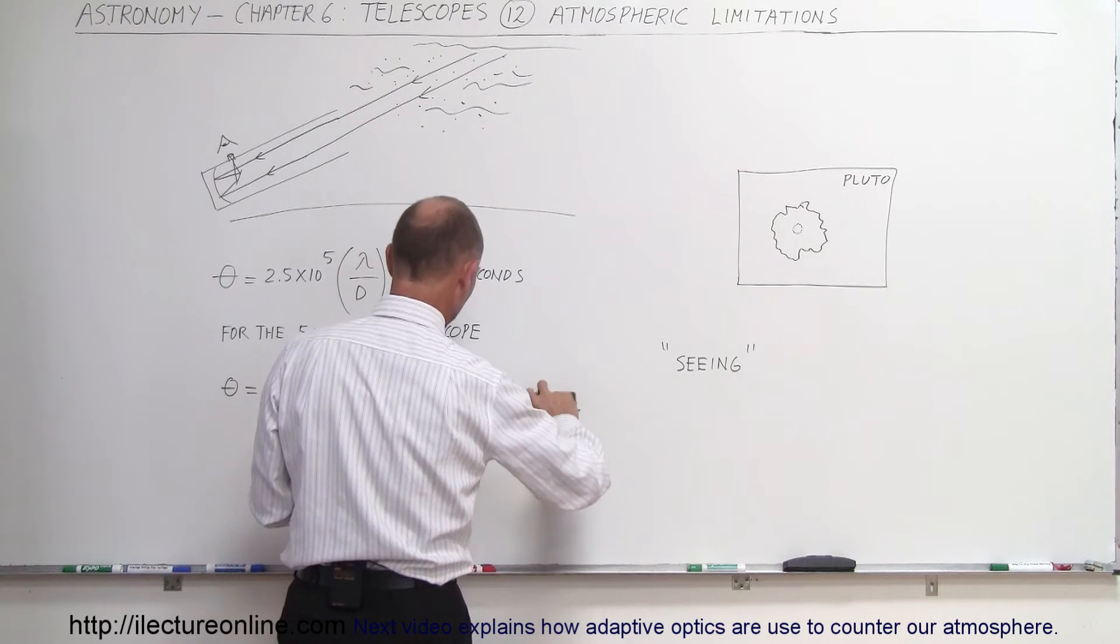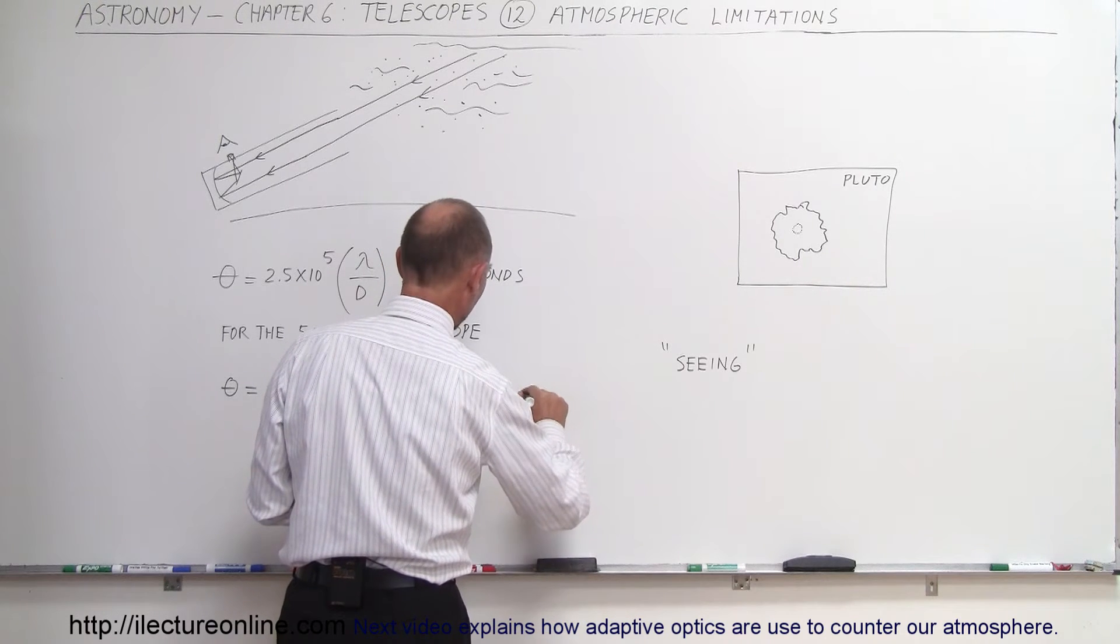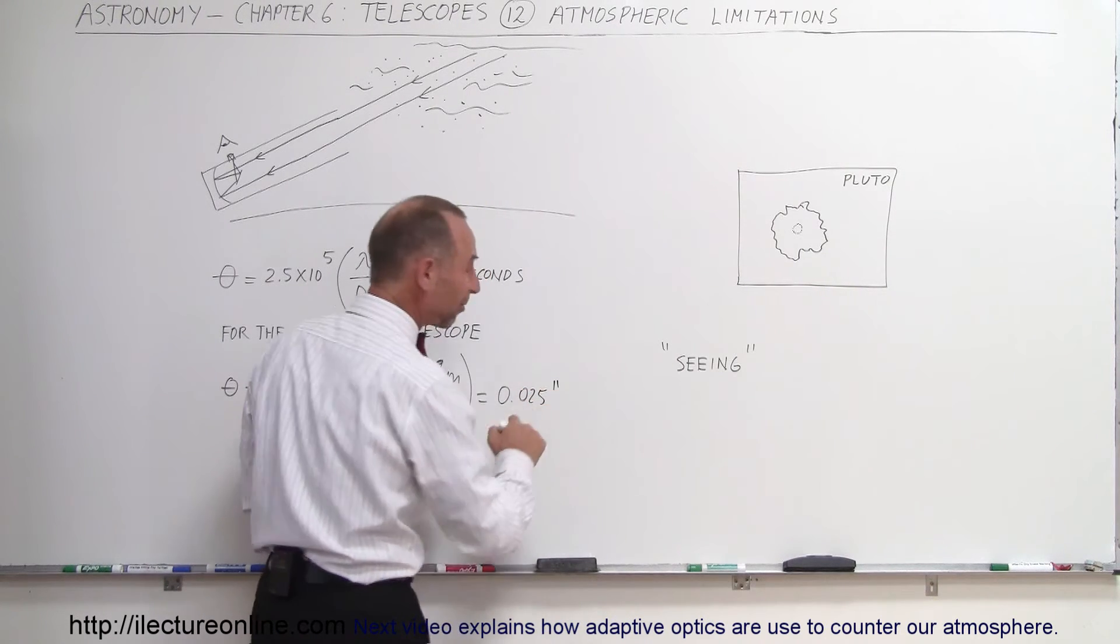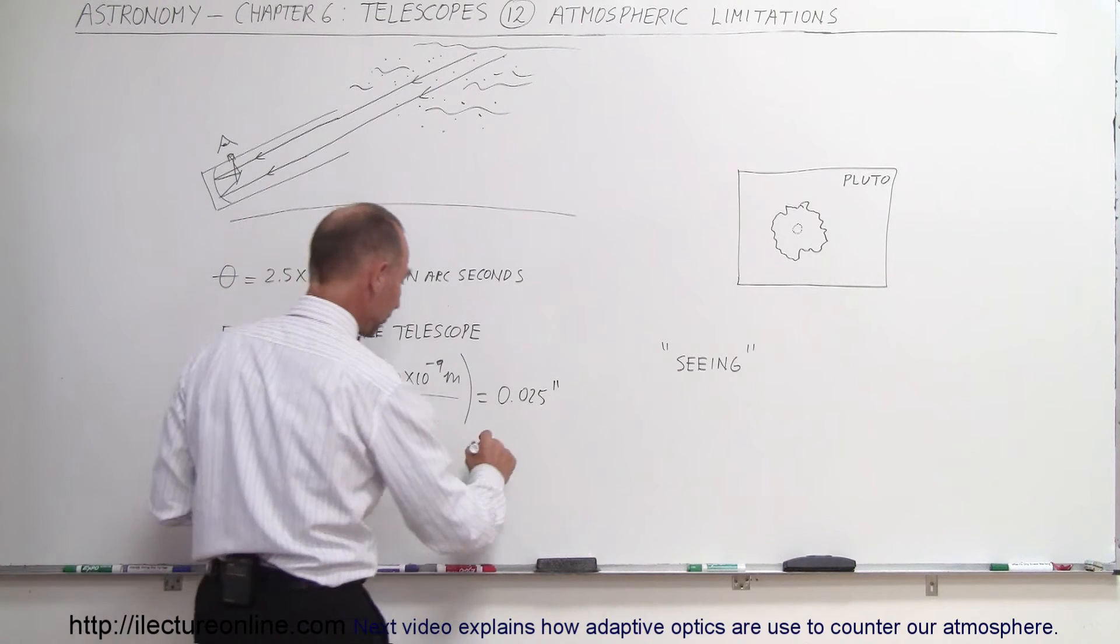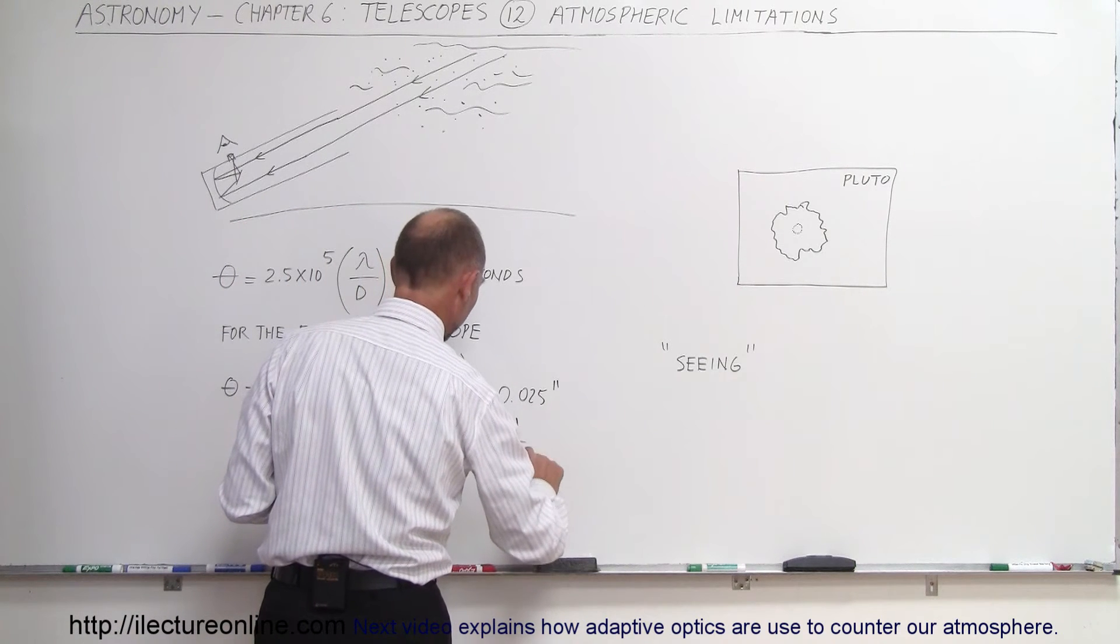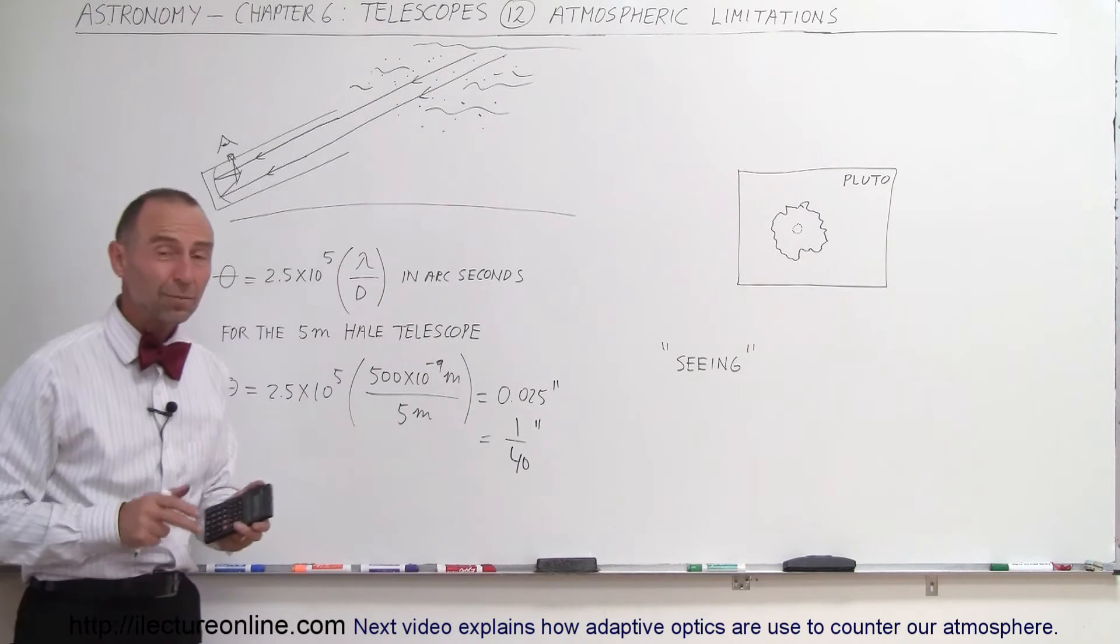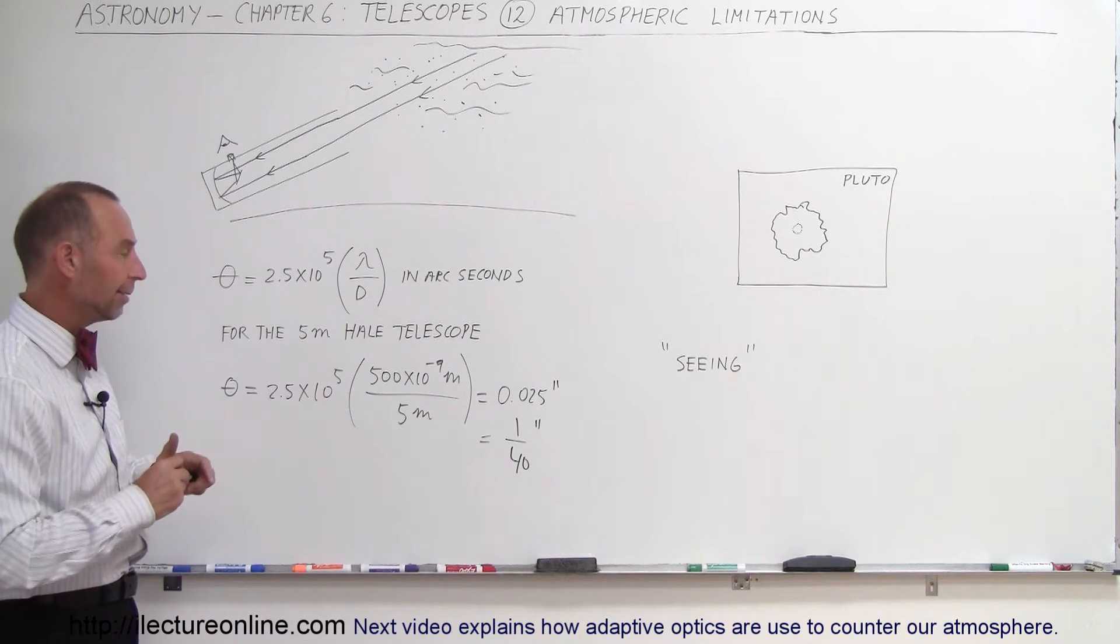and it would be 0.025 arc seconds, which is absolutely amazing. And then if you convert that to a fraction, it's 1/40th of an arc second. So an extremely good resolution angle, yet in real life we don't get that.